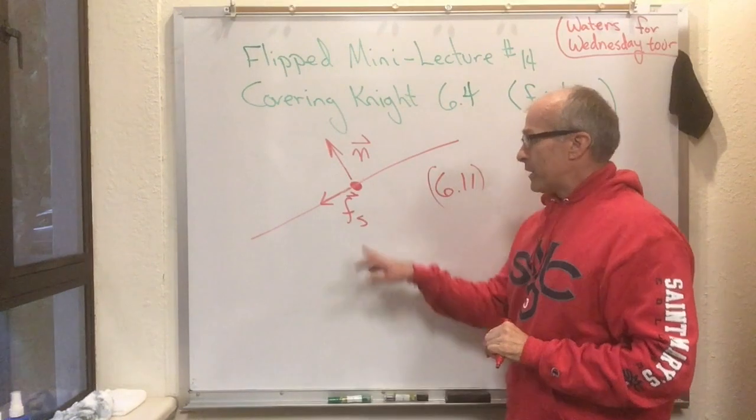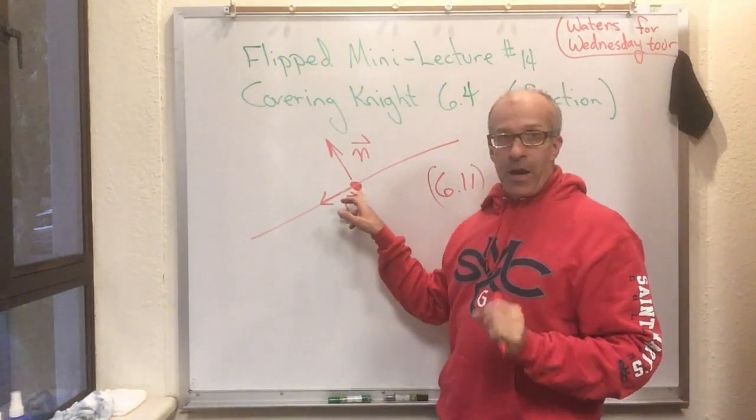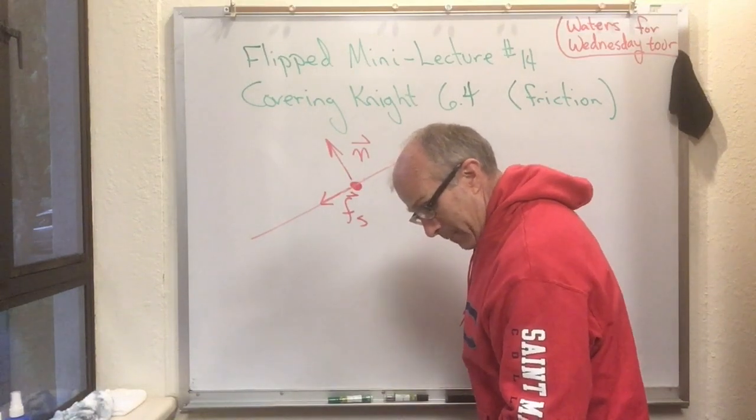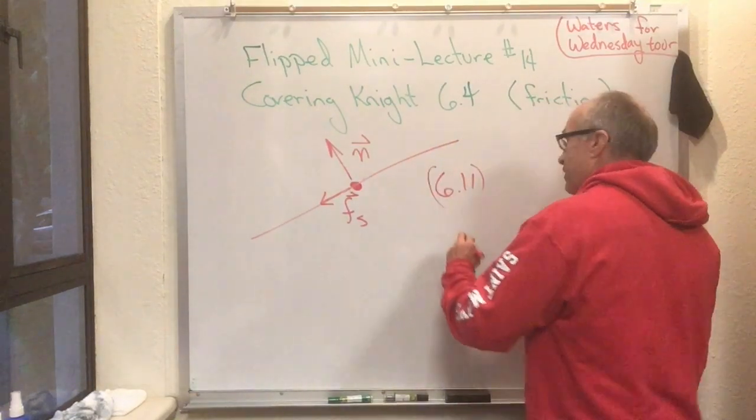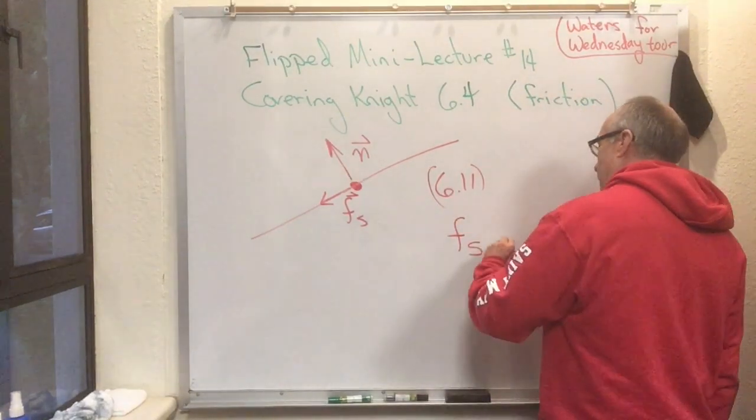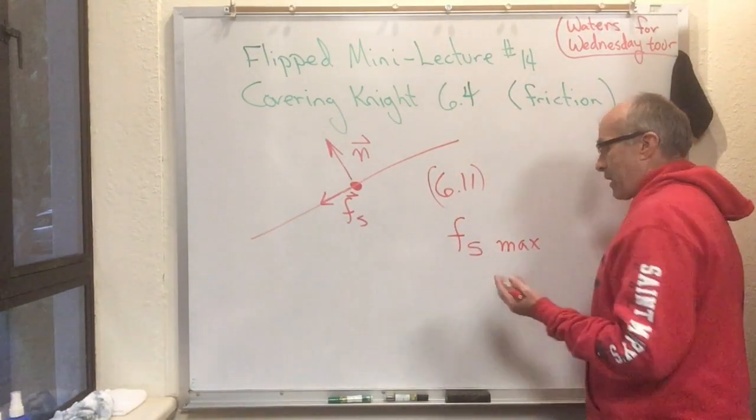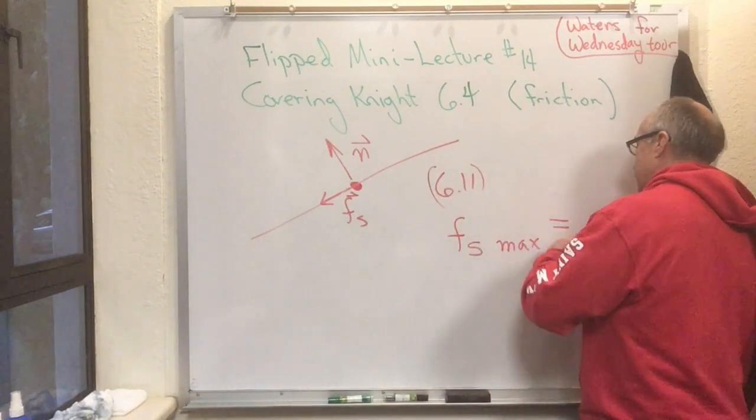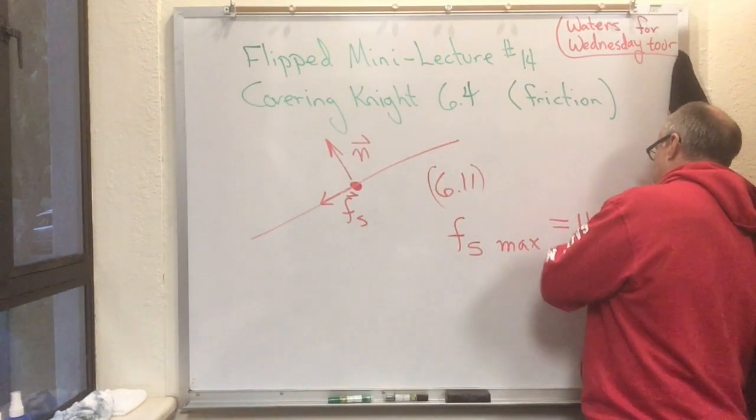But of course, at some point, our box is going to break loose from the plane. And Knight has a formula for that. He says the maximum amount of fs is like this: fs max is how he writes it. The maximum amount of fs is μs times n.